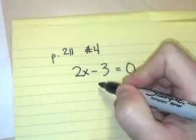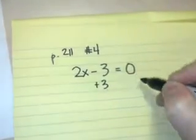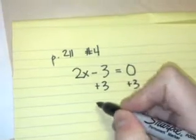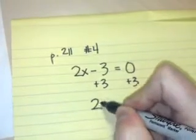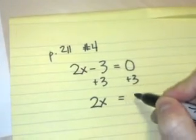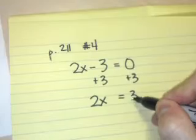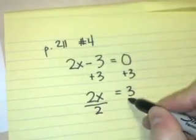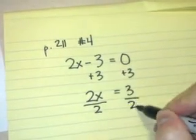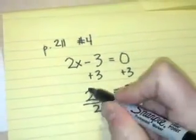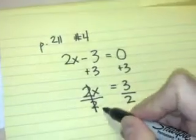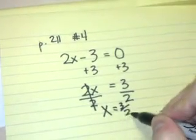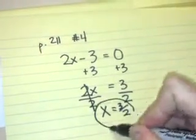Alright, the first thing we're going to do is add 3 to both sides. So we're left with 2x equals 3. Now what can we do? We're going to divide both sides by 2. And we're left with x equals 3 halves.